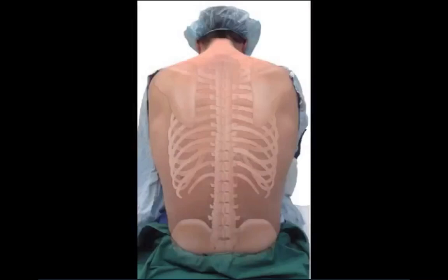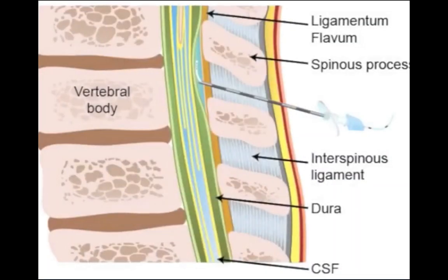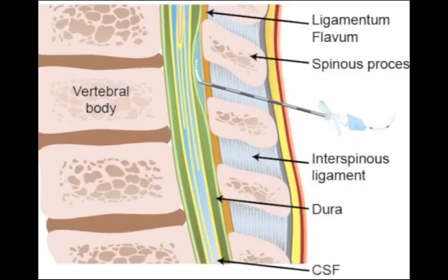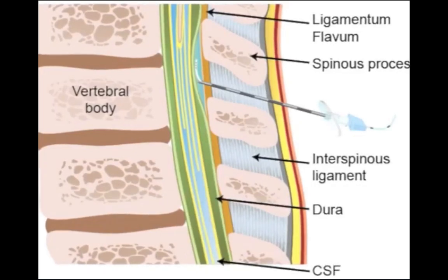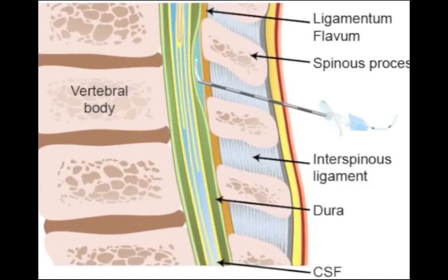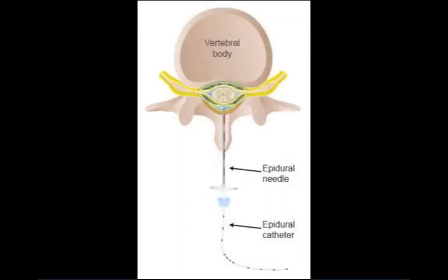Epidural anesthesia may be performed at any interspace in the cervical, thoracic, or lumbar spine. A midline or less commonly paramedian approach is used. Using a midline approach, the needle is entered between the spinous processes and directed cephalad approximately 10 to 15 degrees toward the spinal canal. The needle is advanced through the skin, subcutaneous tissue, supraspinous ligament, interspinous ligament, and ligamentum flavum.